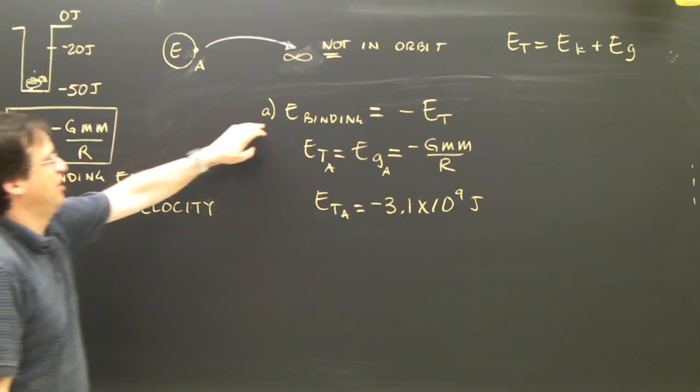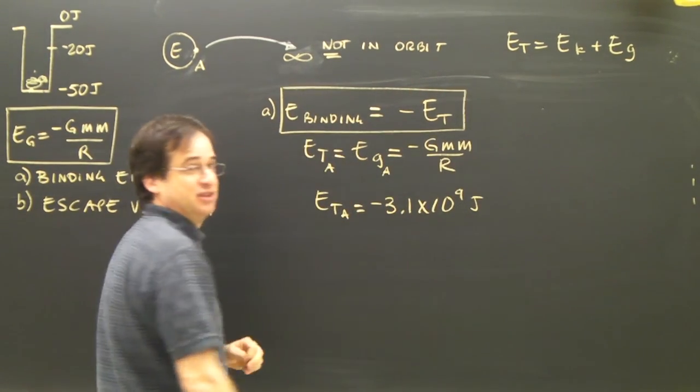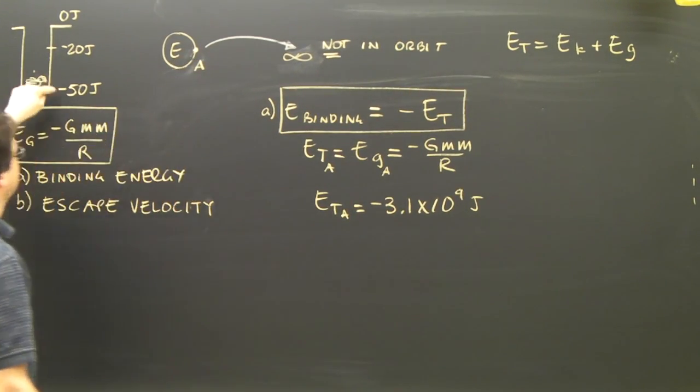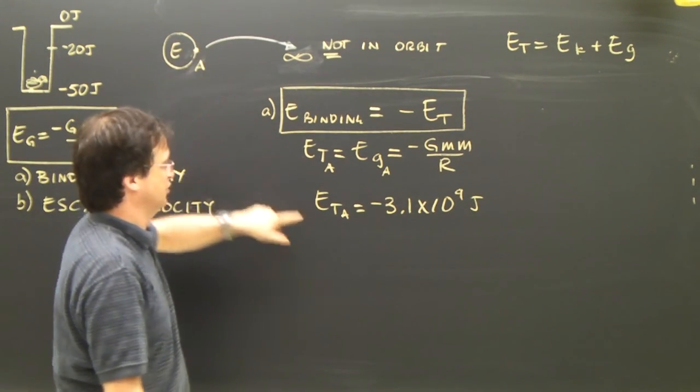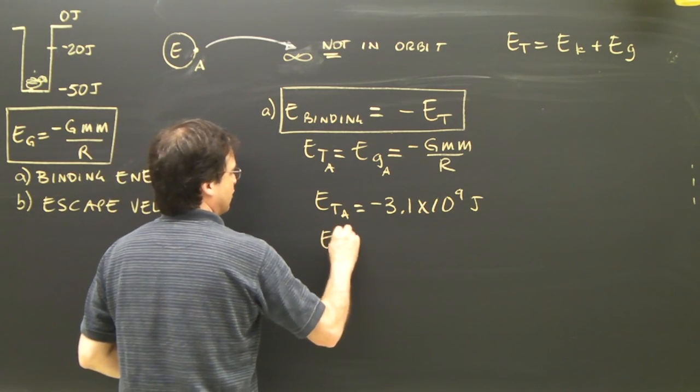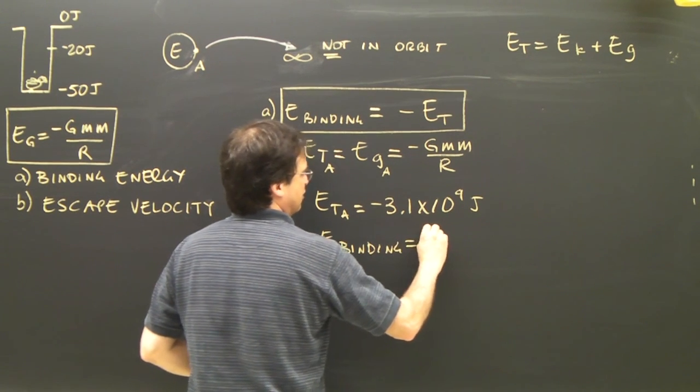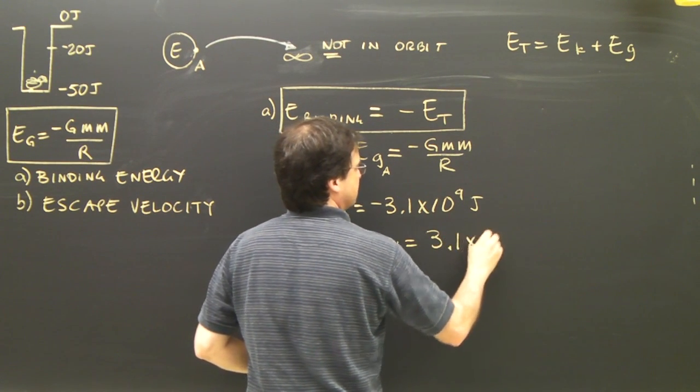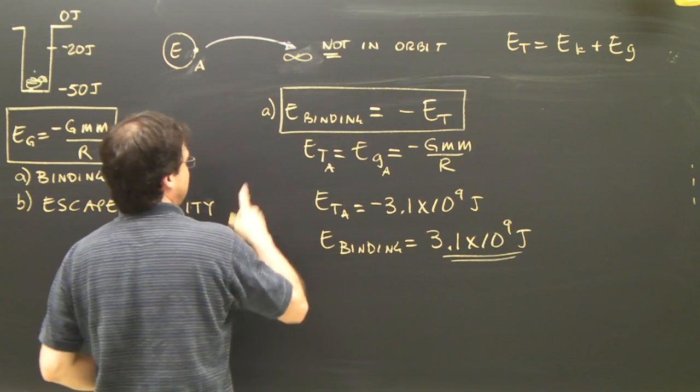And the binding energy is equal to the negative of the total energy. How much energy is holding it down? The turkey has negative 50 joules there. That's what's holding it down. This object on the surface has negative 3.1 times 10 to the 9 joules. So the binding energy is 3.1 times 10 to the 9 joules. So that's A.